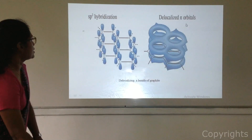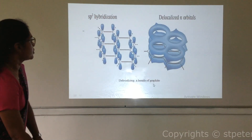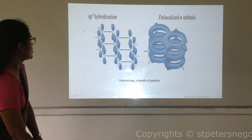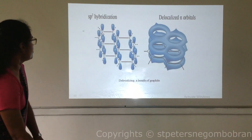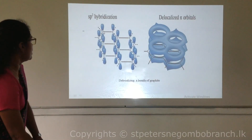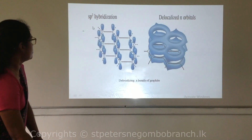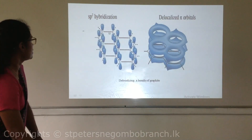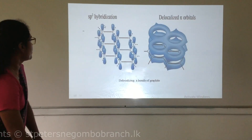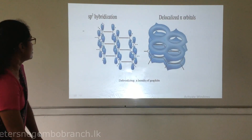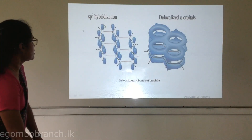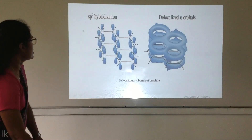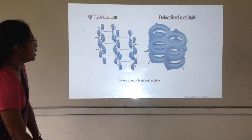Looking at the picture of the graphite structure: if we take one carbon atom, it combines with another three carbon atoms, and it has delocalized pi bonds. Here you can see the delocalized pi orbitals of graphite.